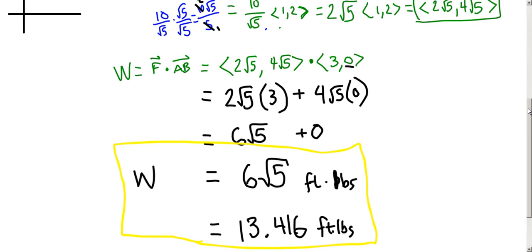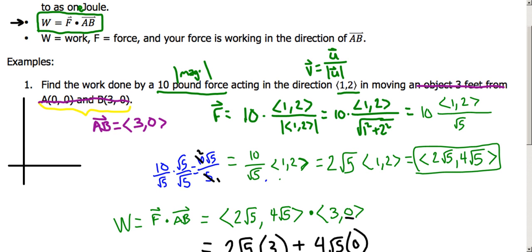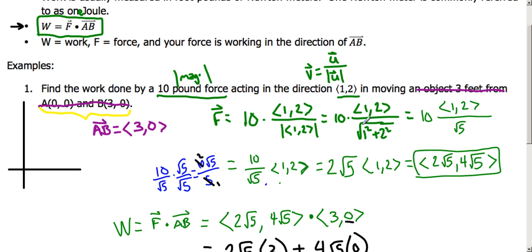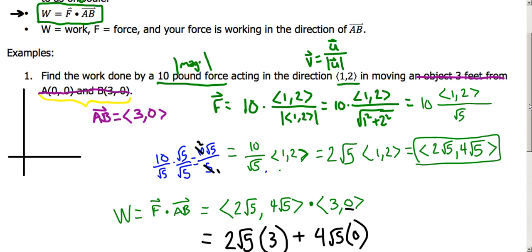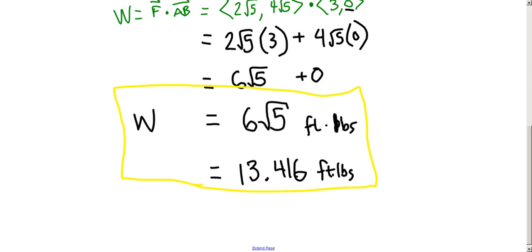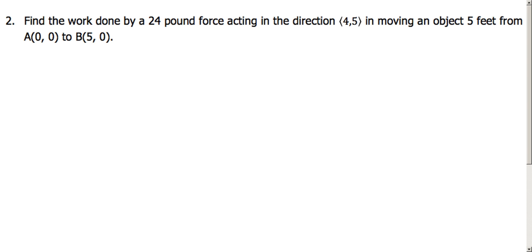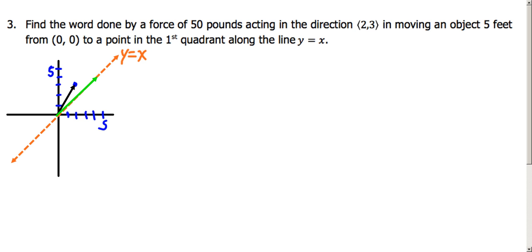To recap: we found our force vector by multiplying the given magnitude times the unit vector, or the direction. We found our A-to-B vector, and we found the dot product of those two. On your notes page, here are a couple more examples similar to that previous one that you can practice, and we'll go over in class tomorrow — examples two and three.